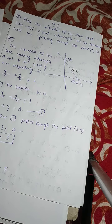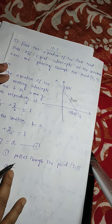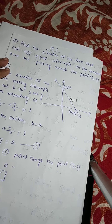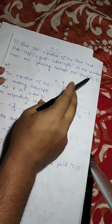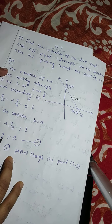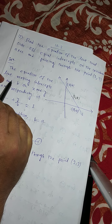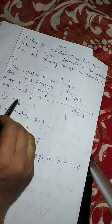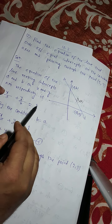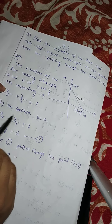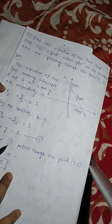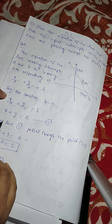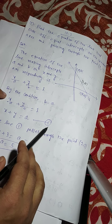Now question number 12: Find the equation of the line that cuts equal intercepts on the coordinate axes and passes through the point (2, 3). The equation of the line making intercepts A and B on the X and Y axes respectively is X by A plus Y by B equals 1. By the problem, B equals A, so X by A plus Y by A equals 1, giving X plus Y equals A. This is equation number 1.